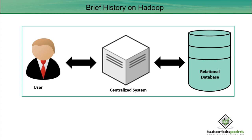Most of the Hadoop code is written by Yahoo, IBM, Facebook, Cloud Data, etc. It provides an efficient framework for running jobs on multiple nodes of clusters. A cluster means a group of systems connected via LAN. Apache Hadoop provides parallel processing of data as it works on multiple machines simultaneously. That is the brief history of Hadoop. Thanks for watching this video.